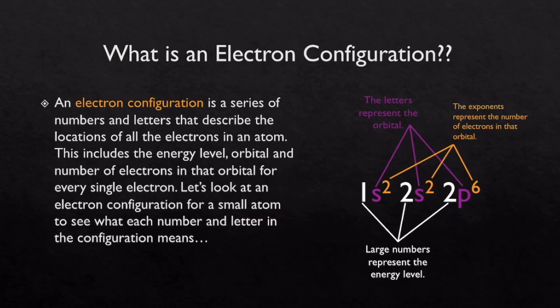So what is an electron configuration? This is a series of numbers and letters that describe the locations of all of the electrons in an atom. This includes the energy level, the orbital, and the number of electrons in that orbital for every single electron. Let's look at an electron configuration for a small atom to see what each number and letter in these configurations mean.